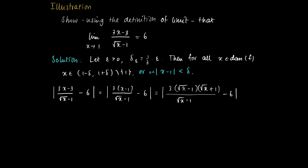So here we get the absolute value of f(x) minus 6 equals 3 times the square root of x plus 1, in brackets the square root of x plus 1 minus 6, which simplifies to the absolute value of 3 times the square root of x minus 3. And this equals 3 times the absolute value of the square root of x minus 1.